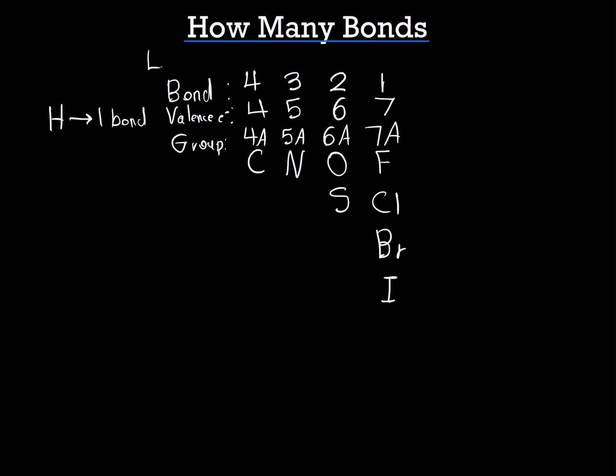Now, how about the idea of lone pairs? Every bond that these elements are going to make, so let's say you have a carbon-hydrogen bond. And this bond right here is going to be made up of 2 electrons. So this is basically equivalent to 2 electrons. So every bond is going to use 2 electrons. The leftover electrons are going to be left over as lone pairs.